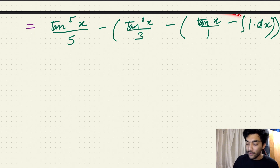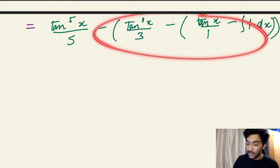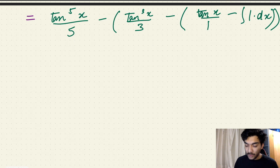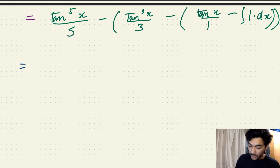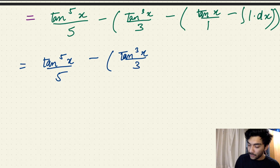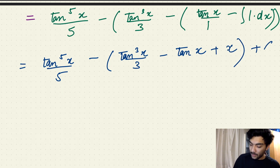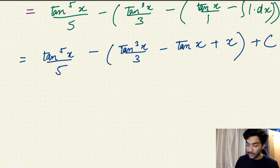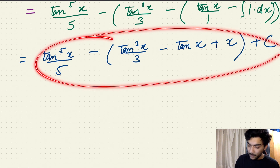When we get rid of all the integral expressions, we can add the constant of integration. So the final indefinite integral expression is tan to the power 5 of x divided by 5, minus tan cubed of x divided by 3, minus tan x, plus x, plus the constant of integration.